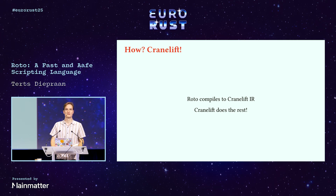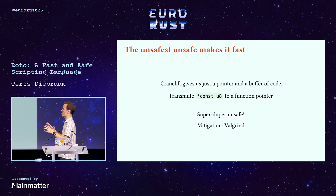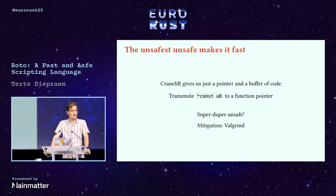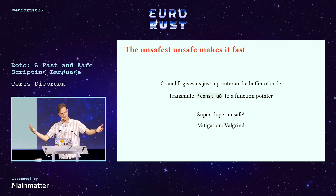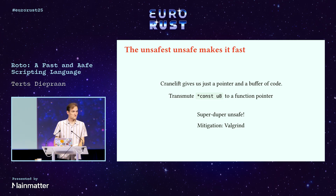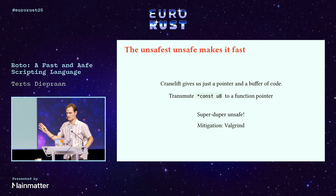CraneLift tells us where our machine code is — we have to pull some tricks. This is the unsafest unsafe I've ever seen, but we have to do it. CraneLift gives us a pointer and a buffer of code, and to run it we need to cast it to the proper function pointer type and then call it. It's super-duper unsafe, but of course something you have to do if you compile to machine code. We've had some troubles, but we fixed a lot of them, and we run Valgrind on our entire test suite to be fairly sure there's no double free or use-after-free happening.